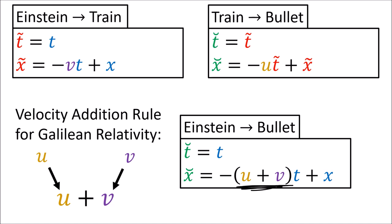This shows us that to combine velocities u and v in Galilean relativity, we literally just add them together. This agrees with our common sense experience that the speed of the bullet on the train should be added to the speed of the train relative to the ground — but we'll find that it's not true in special relativity.